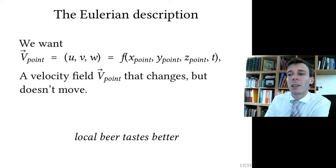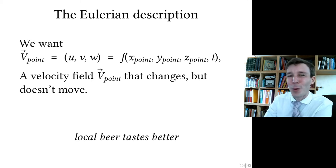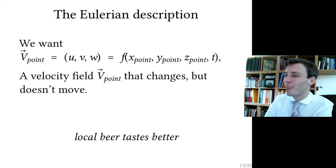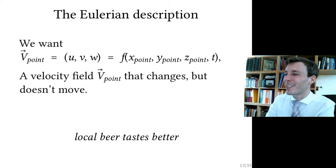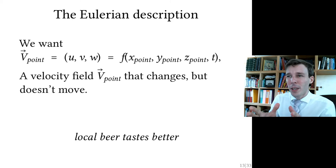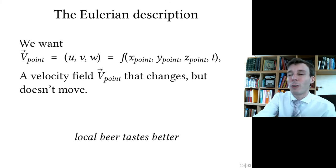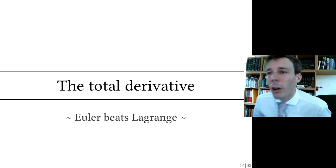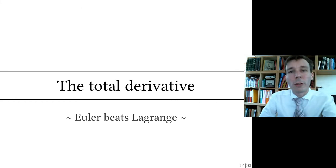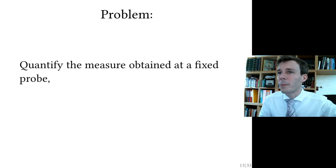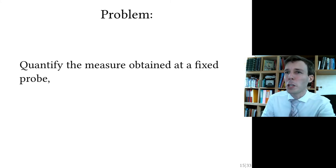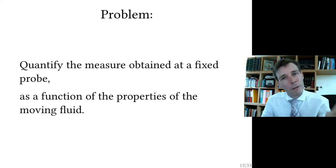A way to say this is that local beer tastes better. If you live in Germany, the worst offense when getting a beer with colleagues is to order one of those awful advertised beers. On the contrary, you should ask what the best local beers are to be tasted. I say this because you need to compute things locally and not follow things as they go along. Euler beats Lagrange and comes up with the total time derivative.